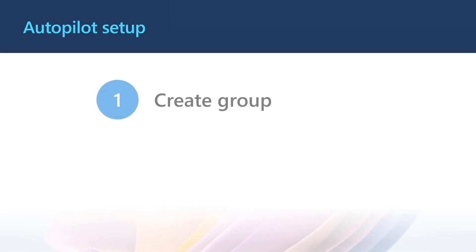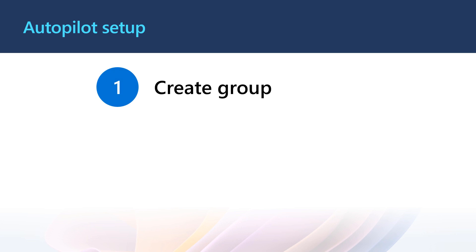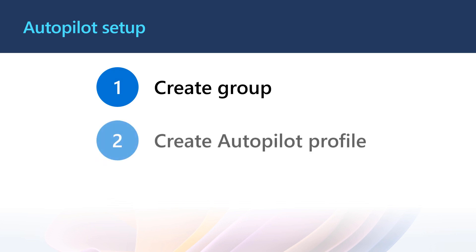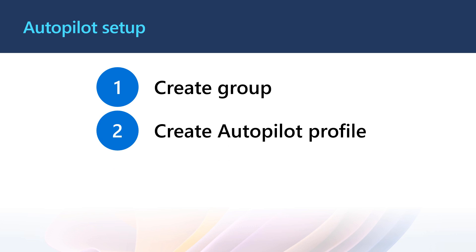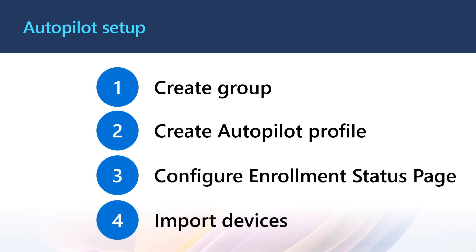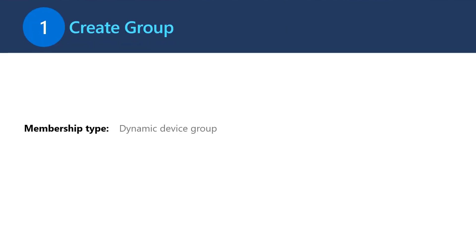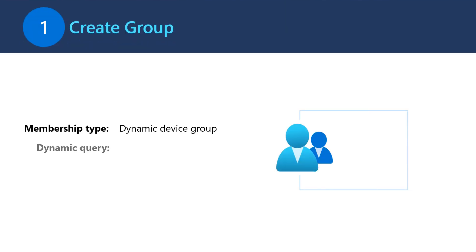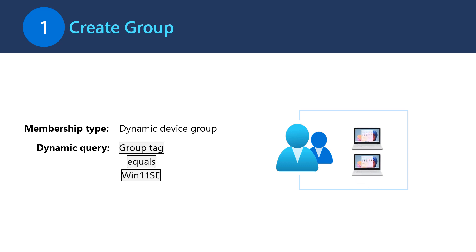For setup, we're going to follow four easy steps. We're going to create a new Azure Active Directory group, create an Autopilot profile and assign it to that group, then configure the enrollment status page, and finally import some Windows 11 SE devices. Starting with step one, I'm going to create a group that contains all of my Windows 11 SE devices with the group tag Windows 11 SE. This is the easiest way to target my Windows 11 SE devices separately from my other Windows 10 or Windows 11 devices. You can get your OEM or partner to set a group tag for your Windows 11 SE devices when they import them.